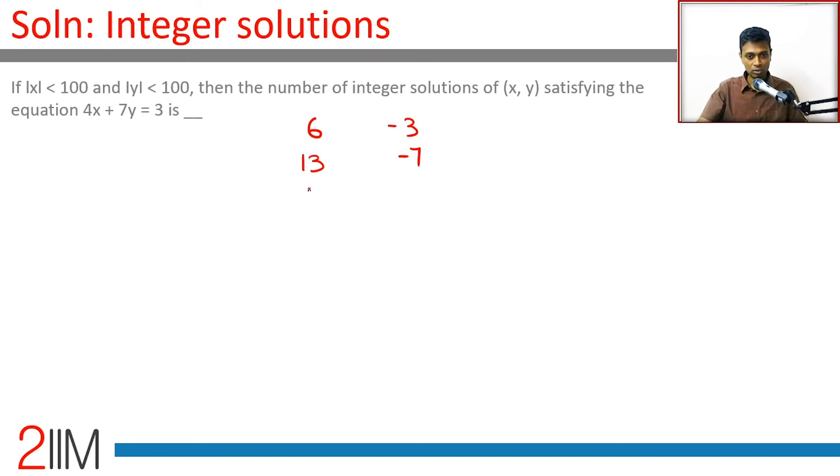How do we work? 6 and minus 3 works, 13 and minus 7 works, 20 and minus 11 works, 27 and so on. Clearly this is going to hit 100 before this goes anywhere close, so we don't have to worry about this constraint - you have to worry about this constraint.